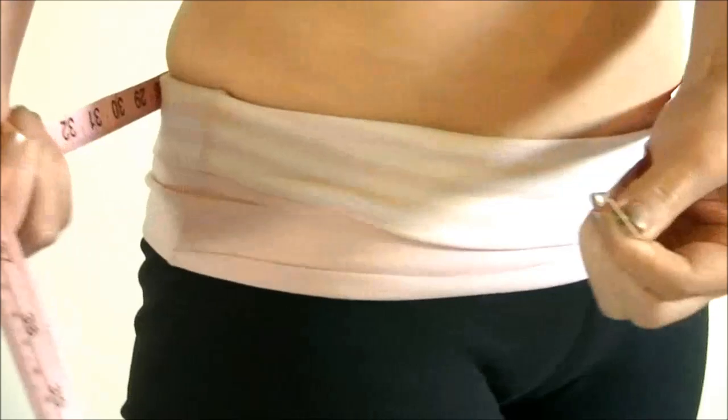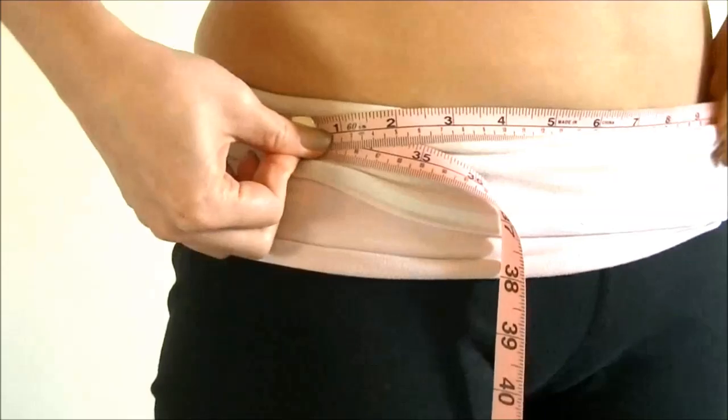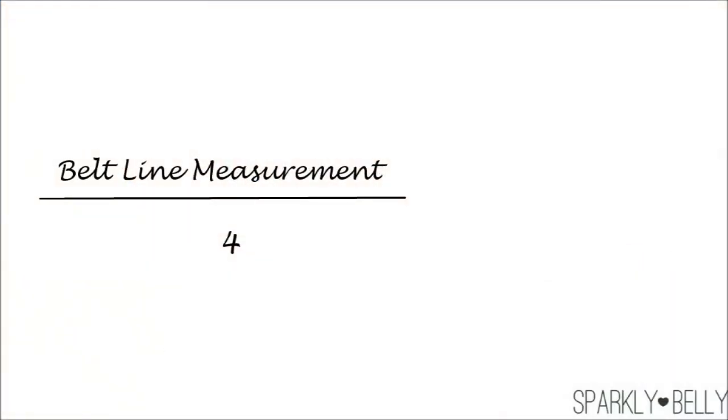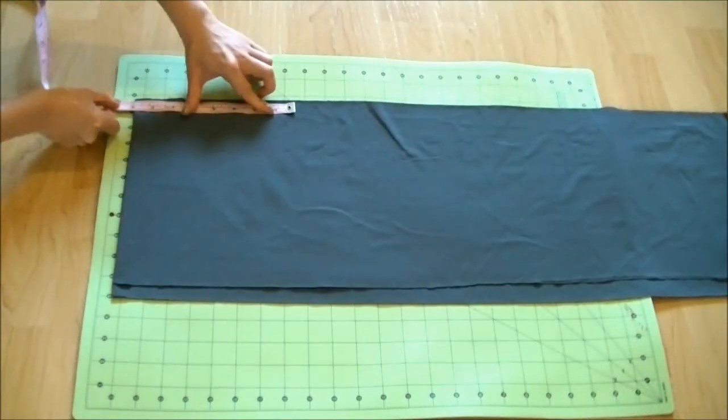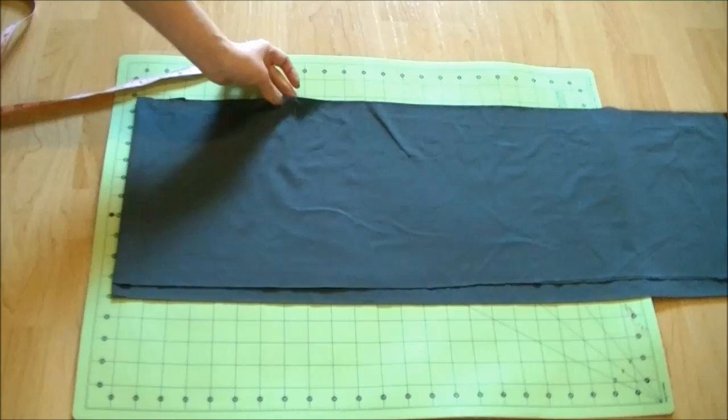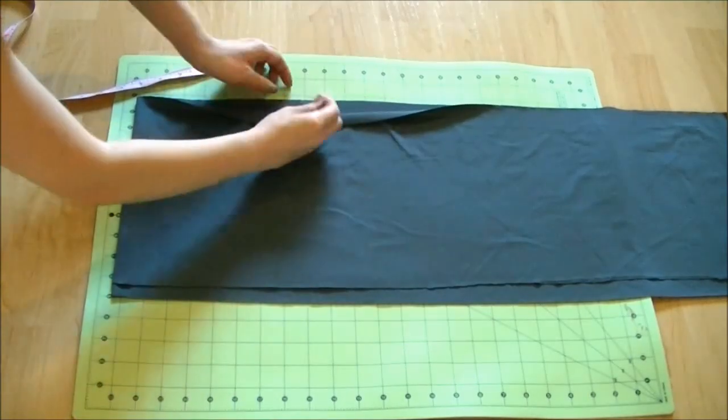Then measure your belt line where you want the overskirt to sit. Divide the measurement by 4 and subtract 2 and a half centimeters or 1 inch to account for the stretch. Measure it from the fold and place a pin there to hold top two layers together. Then another one to pin the bottom two layers together.